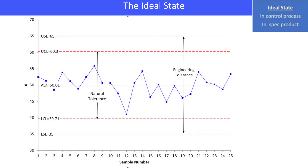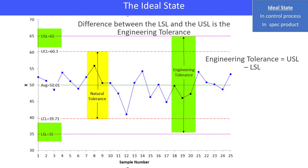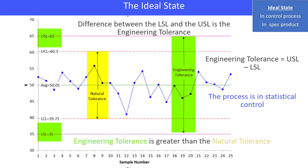We're going to start with the ideal state, where we have an in-control process and also in-spec product. The difference between the upper spec and lower spec we call the engineering tolerance. Our natural tolerance is what the process does, and here the engineering tolerance is greater than the natural tolerance. Our process is in control, and since our specifications are beyond the control limits, all the product is within specifications. That's the ideal state — your process is in control and making in-spec product, and it's going to do that for the foreseeable future until the process changes.